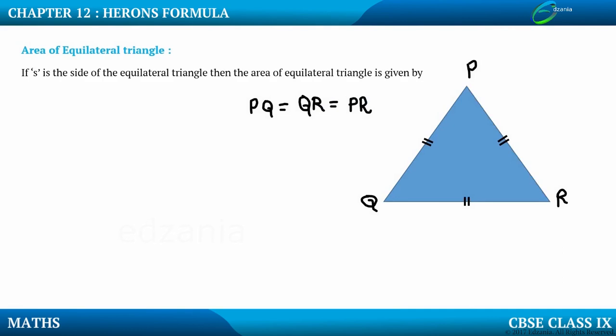If S is the side of equilateral triangle, then the area of equilateral triangle is given by root 3 upon 4 into side square. So suppose this is S. If PQ is S, then we can clearly say that PR and QR are also S because all the three sides are equal. Then this area of the triangle is given by root 3 upon 4 into side square.